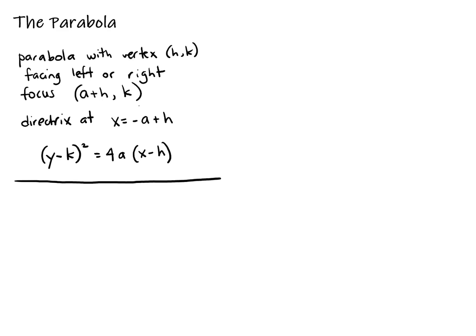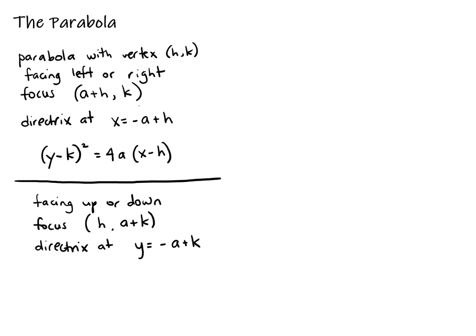For a parabola facing up or down instead, we just change the location of x and y in the formula. Instead of (y - k)², we write (x - h)², and then 4a times (y - k). Notice the positions of x and y are switched. A helpful way to remember: up and down parabolas have x squared, and left and right parabolas have y squared. That helps you pick which formula to use.